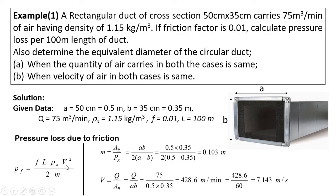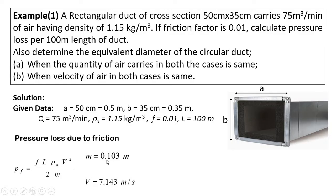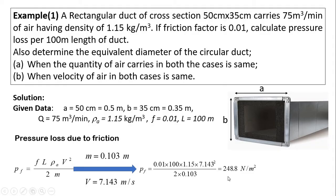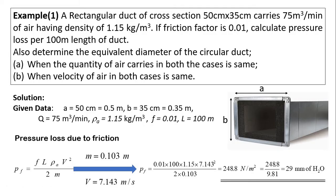Now all values in the formula are known. With m = 0.103 m and v = 7.143 m/s, by putting all values we get pressure loss due to friction Pf = 248.8 N/m². We can convert this pressure loss to mm of water column by dividing by 9.81, which gives 29 mm of water column.